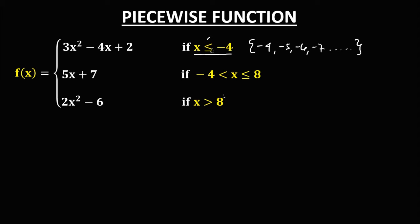For the second condition, we have negative 4 is less than x, but x is less than or equal to positive 8. So the set of numbers are those between negative 4 and positive 8: negative 3, negative 2, negative 1, 0, 1, and so on until positive 8, because x is equal to positive 8. These are the set of numbers under this condition.